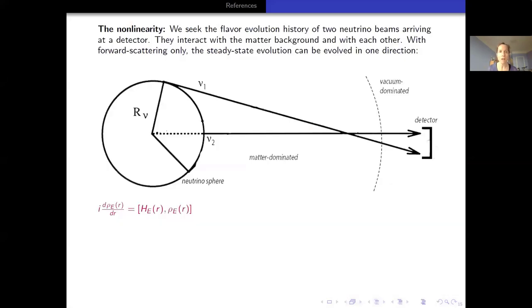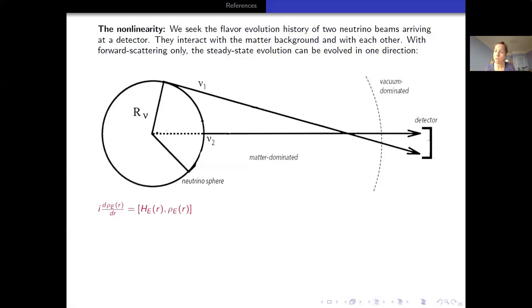Here's the non-linearity I'm talking about. This is a toy model with two neutrino beams emanating from this neutrino sphere, which you could think of as the surface of last scatter from the core. It's a toy model in that there are two neutrino beams as opposed to more like 10^58 for a realistic event. They stream into our detector on Earth through this matter-dominated region, the supernova envelope. With forward scattering only, as you see in this picture, there's no back scattering yet. The steady state evolution can be evolved forward in one direction, no problem for integration, or backwards if you have a flavor measurement at your detector.